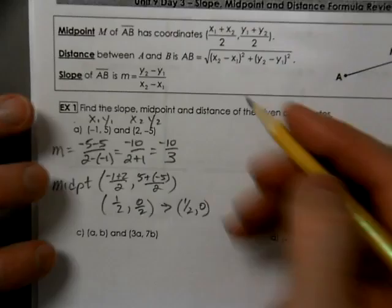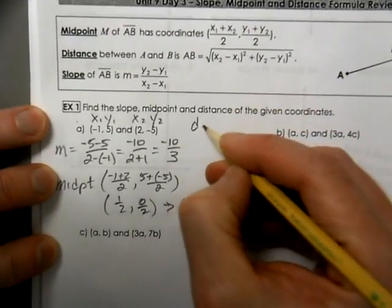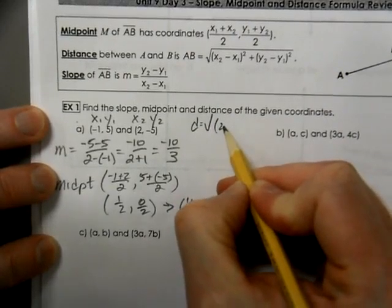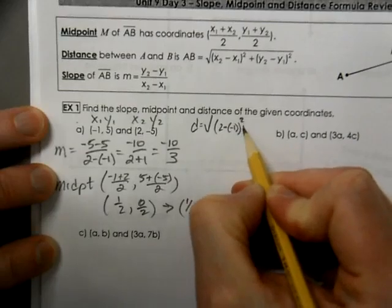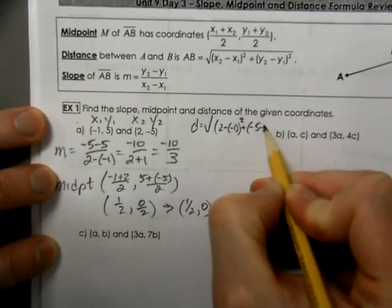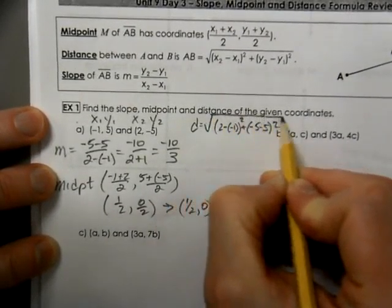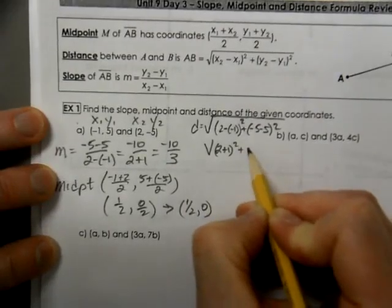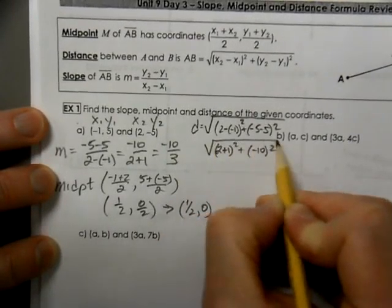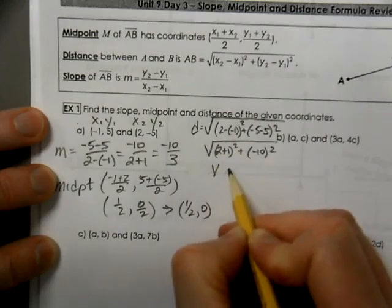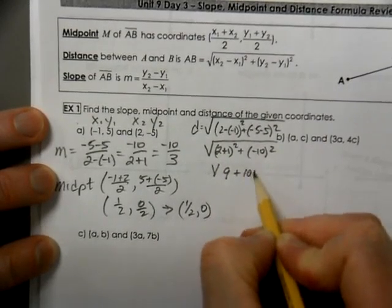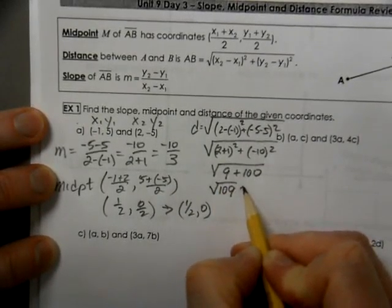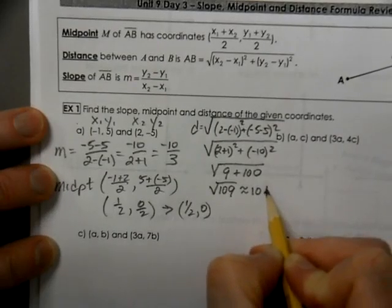So finally, we're going to calculate the distance. So we take our x2 minus our x1 and our y2 minus our y1. That becomes 2 plus 1 squared and negative 10 squared. That becomes 3 squared, which is 9, and 10 squared, which is 100. So that's 109, which with your calculator, you can see that that's 10.44.